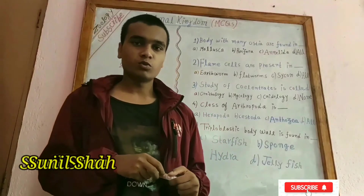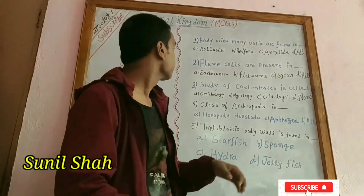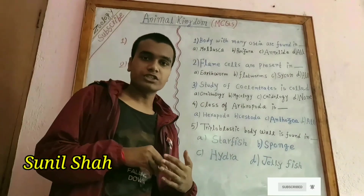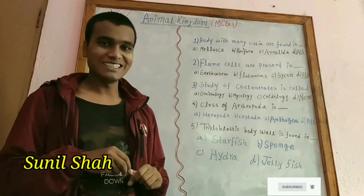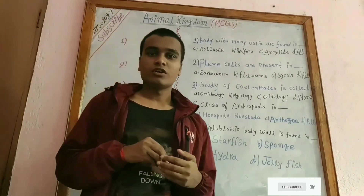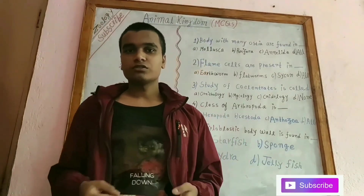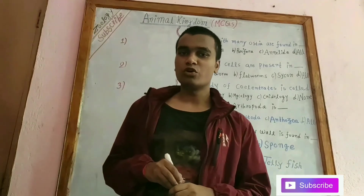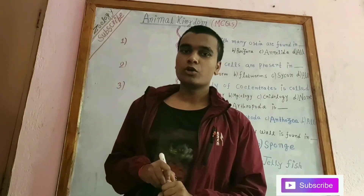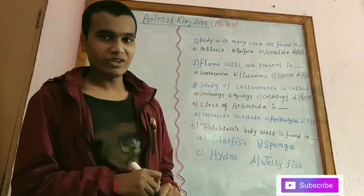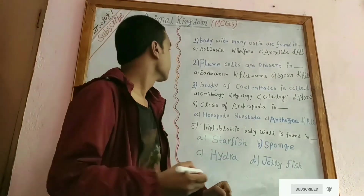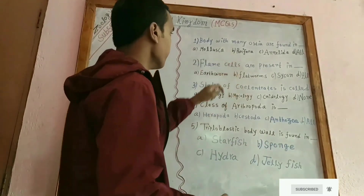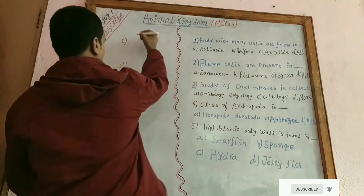In question number 1 of the animal kingdom section, bodies with many pores are found in which phylum? There are numerous minute pores present on the body of phylum Porifera. Therefore, the answer is option B — Porifera.